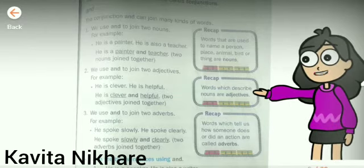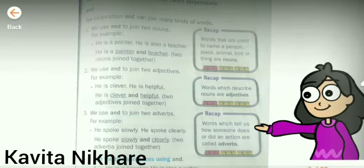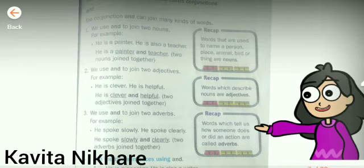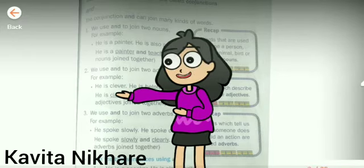Words which describe nouns are adjectives. Adverb means words which tell us how someone does or did an action, called adverbs. And today we are going to learn conjunctions — what are conjunctions?